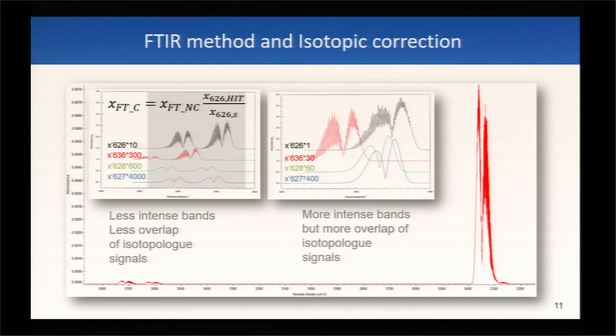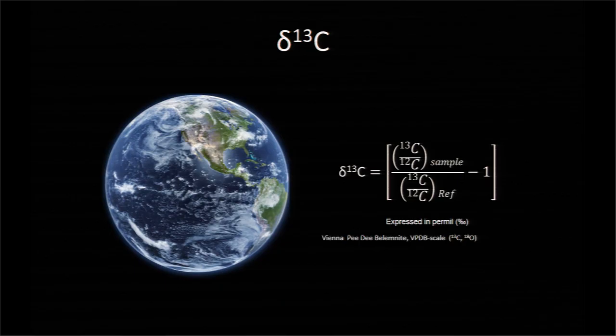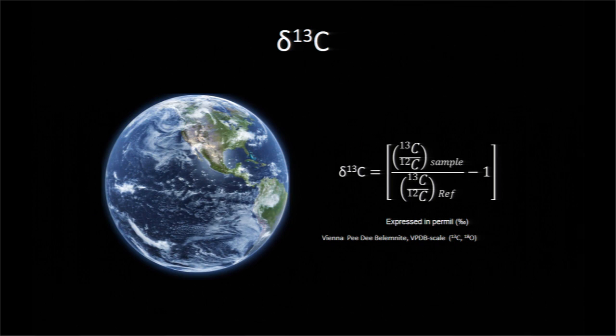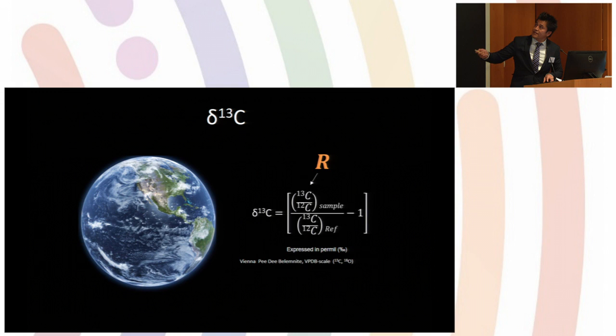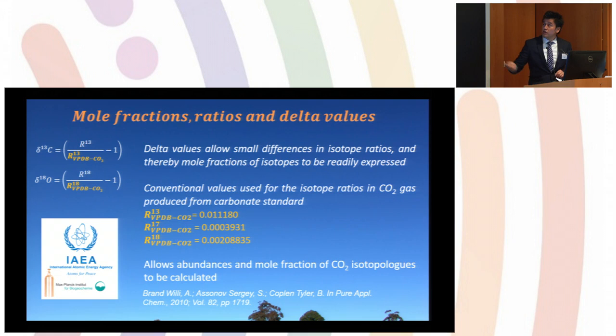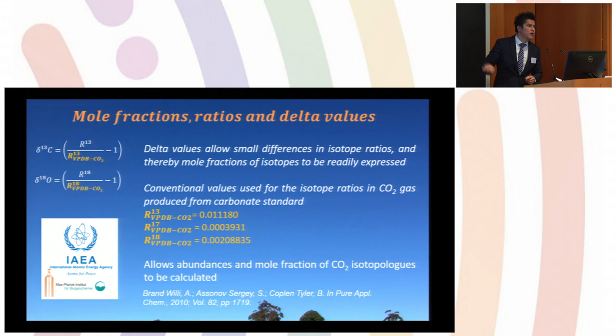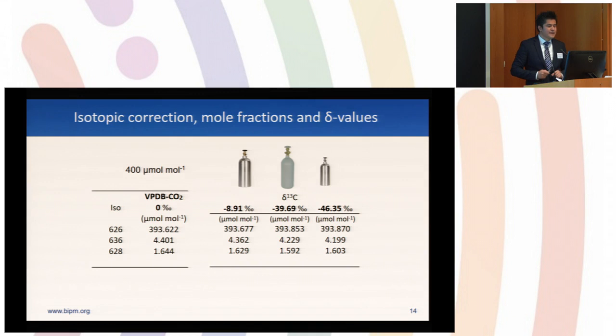In this field, to differentiate how much of each isotopologue is present, we use the delta notation. Delta 13C is the difference of the ratio of the sample and the reference, normalized by the reference. We have this ratio from the reference we are using. In our case, we are using conventional values for isotopic ratio CO2 gas produced from a carbonate standard. These are published, very well-known values that we use for our measurements.